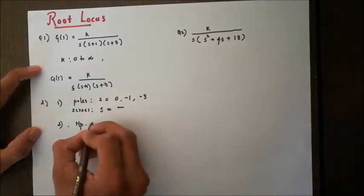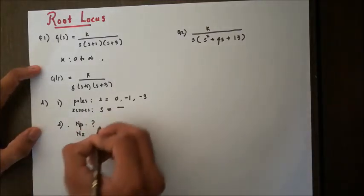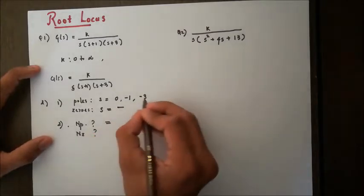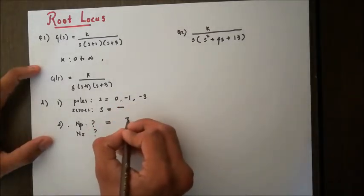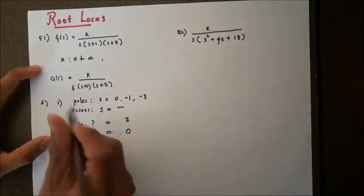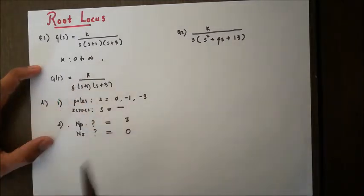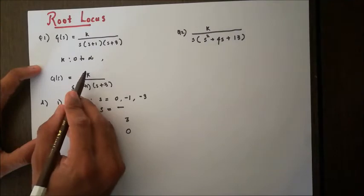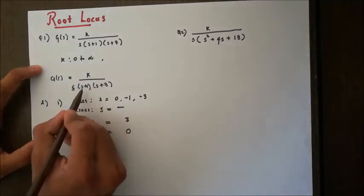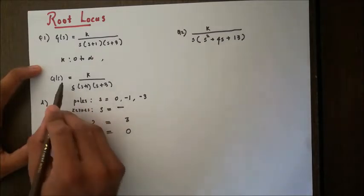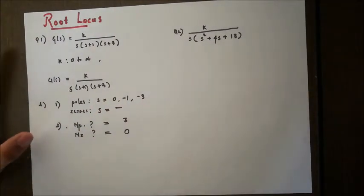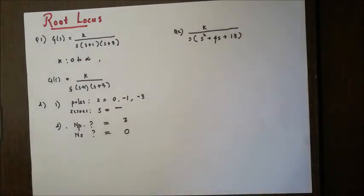Next we calculate the number of poles and the number of zeros. The number of poles is three and the number of zeros is zero, as there are no zeros. Zeros are values of s that make the numerator zero, and poles are values of s that make the denominator zero — giving a 1/0 infinity form.